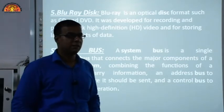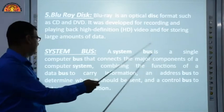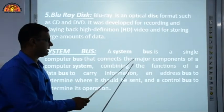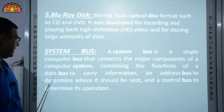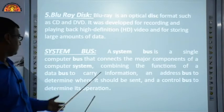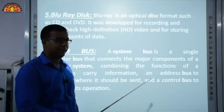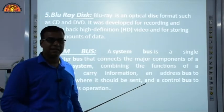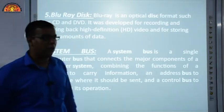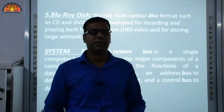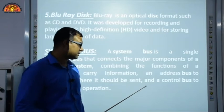Next is the system bus, one of the most important parts of any computer. A system bus is a single computer bus that connects the major components of a computer system. It combines the function of three buses: the data bus, which carries information; the address bus, which determines where data should be sent; and the control bus, which determines operations and controls all activities. So there are three types of buses: address bus, control bus, and data bus.